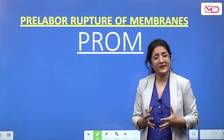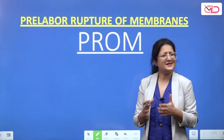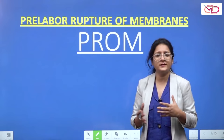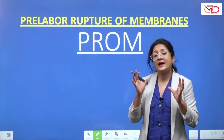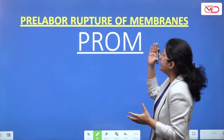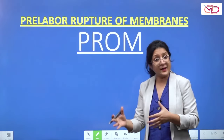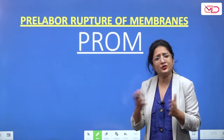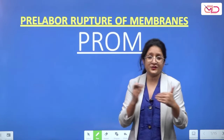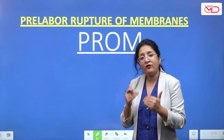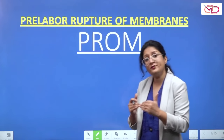Give up the habit of calling it premature rupture of membranes because it just confuses the diagnosis. When you call it premature rupture of membranes, you confuse it with preterm rupture of membranes. Call it pre-labour rupture of membranes — that's what PROM is. Membranes can rupture and leaking happens during the course of labour normally, but when it happens before the onset of labour, that is PROM.